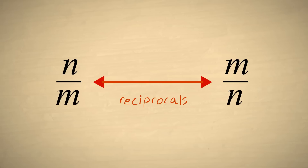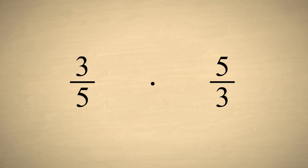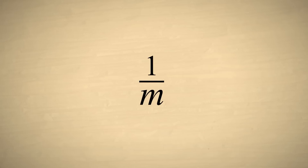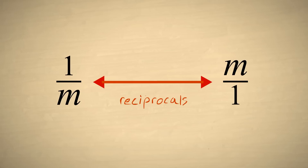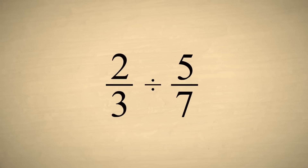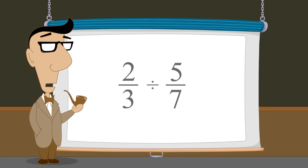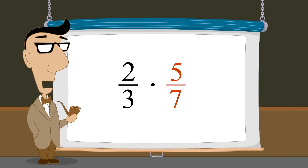For example, the reciprocal of three-fifths is five-thirds. If we multiply three-fifths times five-thirds, the product's numerator and denominator are both fifteen, and the result is one. We can use this rule for unit fractions as well — swapping the numerator and denominator of a unit fraction one over m gives us m over one, which is the same as the integer m. Now that we know how to take the reciprocal of any fraction, let's try dividing two common fractions: two-thirds and five-sevenths. We multiply two-thirds by the reciprocal of five-sevenths, which is seven-fifths. Multiplying the numerators and the denominators, we get fourteen-fifteenths.